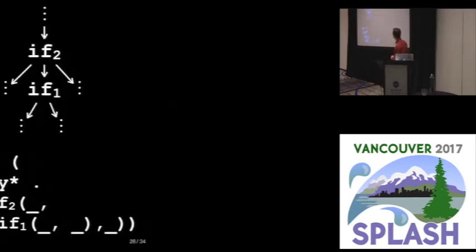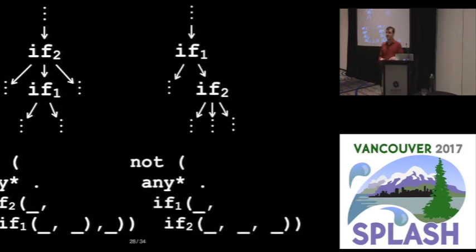Same situation shows up for a one-armed if. We just want to check to see if a one-armed if is inside of a two-armed if. But the important difference here is now we actually have a choice. Because if we want to choose the other tree, we can just restrict seeing a two-armed if inside of a one-armed if.